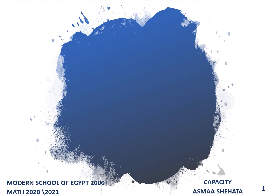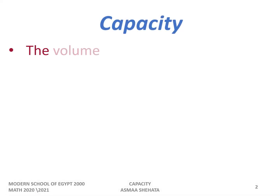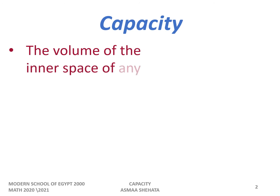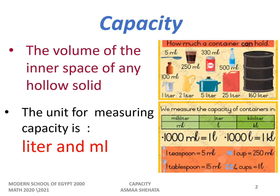We are going to learn about capacity. Capacity means the volume of the inner space of any hollow solid. The unit for measuring capacity is liter or milliliter, while volume is measured in meter cube, centimeter cube, or millimeter cube. Liter means decimeter cube and milliliter means centimeter cube. We measure capacity using liters and milliliters, and now we will learn how to change units to liters or milliliters.